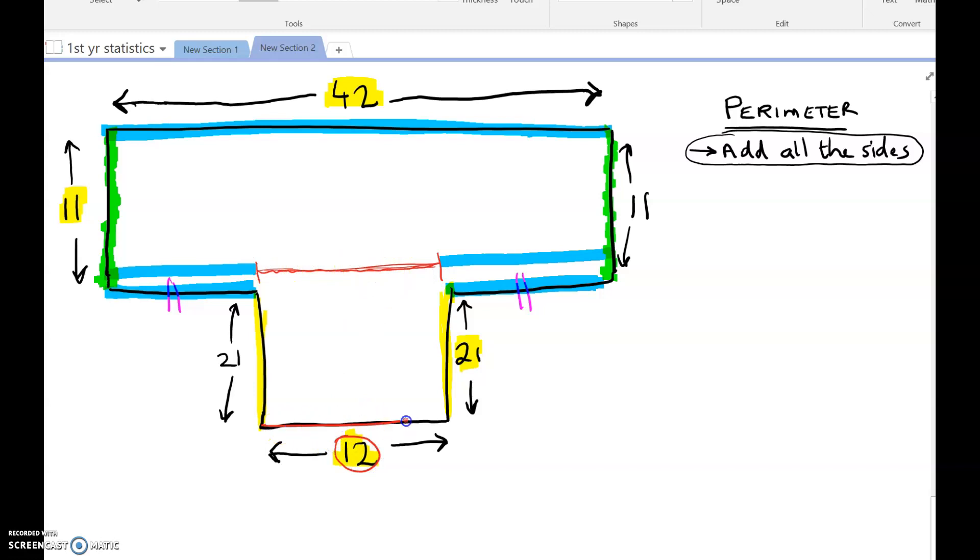It's 12. See the way it's 12 here, that means it's 12 here. So these two bits must be 42 without this 12.